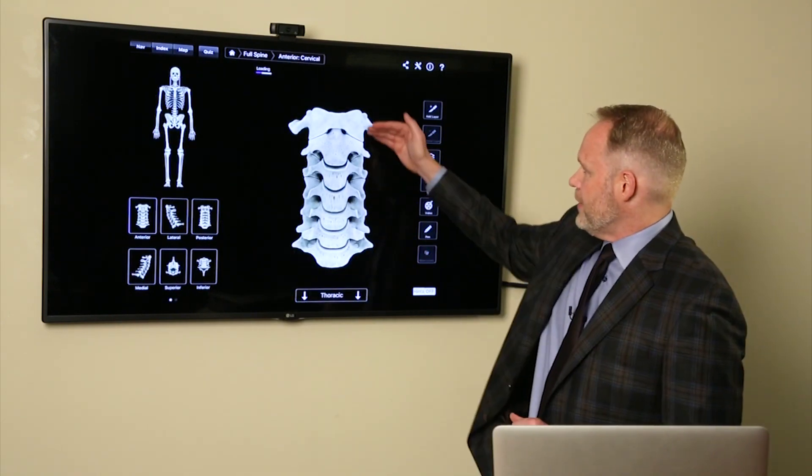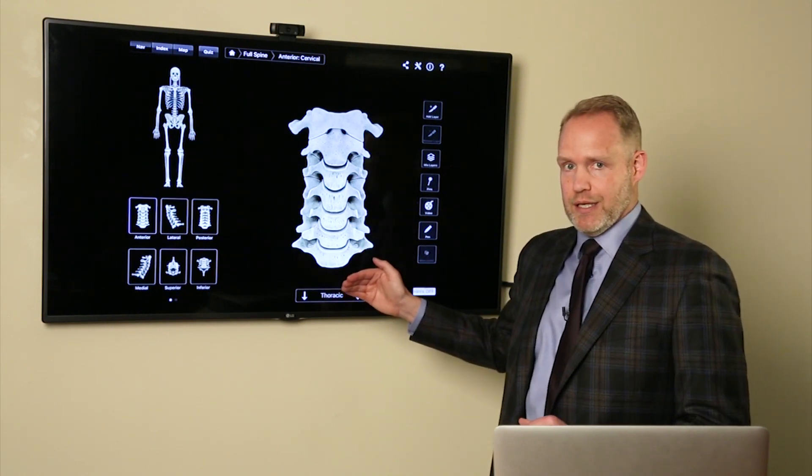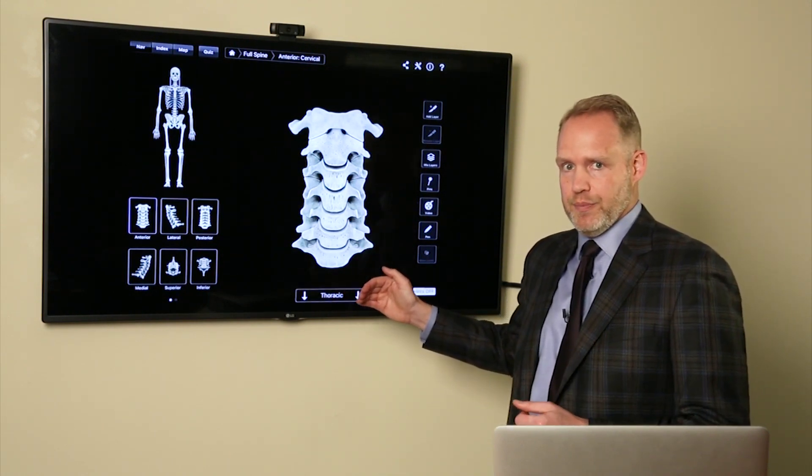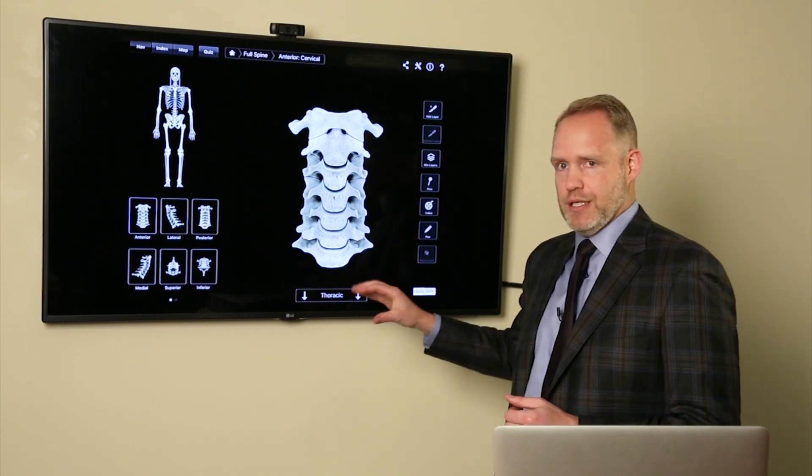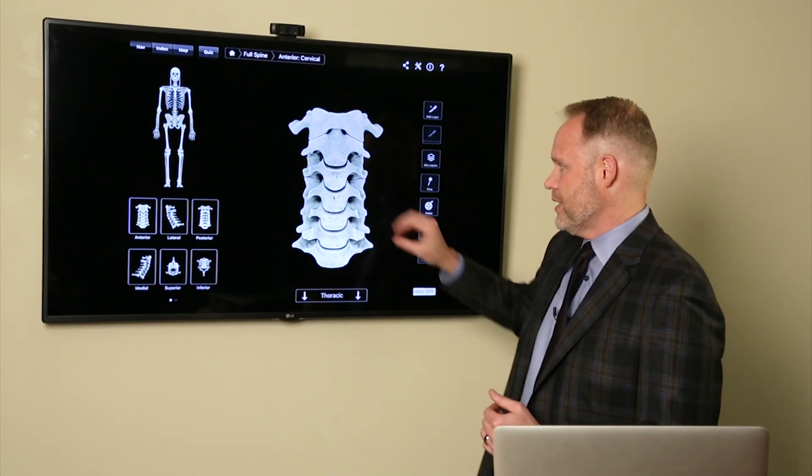Now we'll zoom in. So now we're just focusing on the neck itself because that's primarily the area that you suffer injury from a whiplash. Sometimes it goes down into the thoracic or the mid-back, but generally speaking, it's the neck.